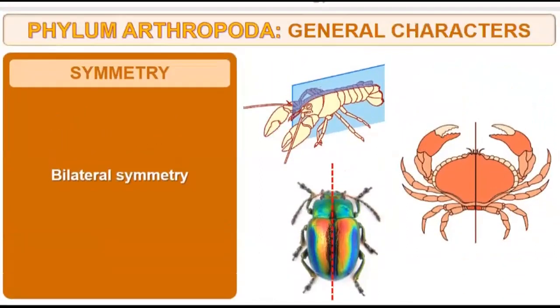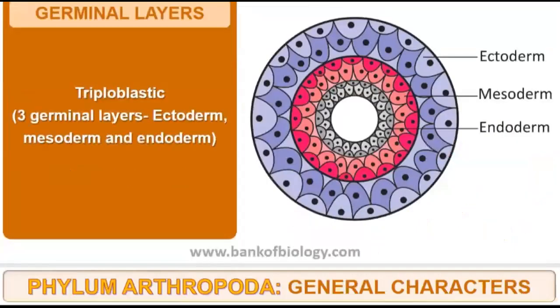In symmetry, there is bilateral symmetry. From the central axis, we can divide the organisms into two equal parts. The symmetry is bilateral symmetry.